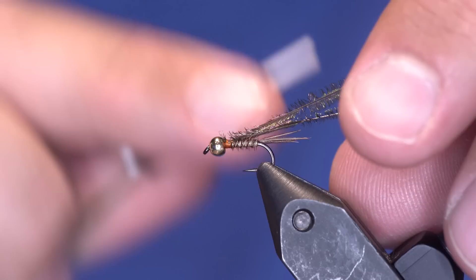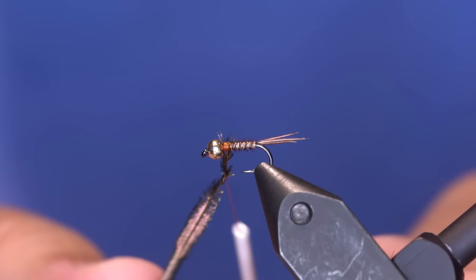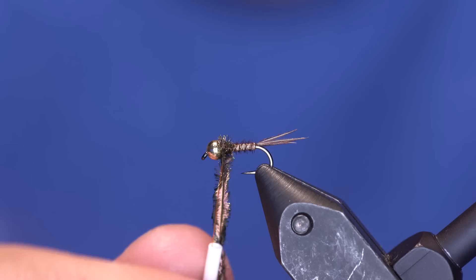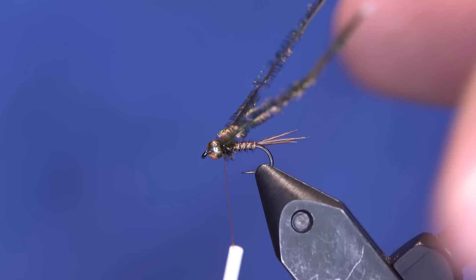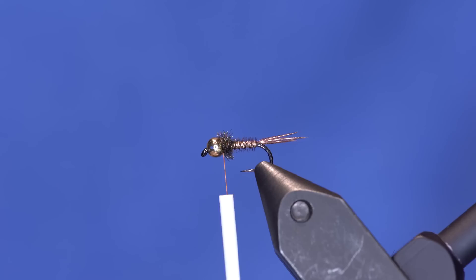And then I'm gonna take those and kind of wrap them around my thread a few times and I'll wrap those both at the same time. I just want a little hint of peacock and that will make it more durable. It's not going to maybe look as pretty, but that's a little hack to have more durable peacock. And then you can just break them off. Okay, so there's not going to be a wing case on this one.